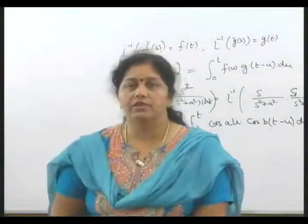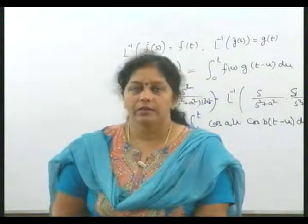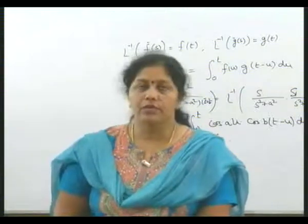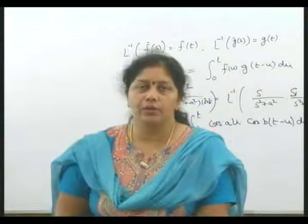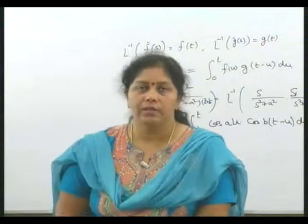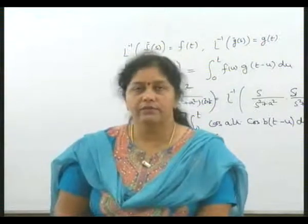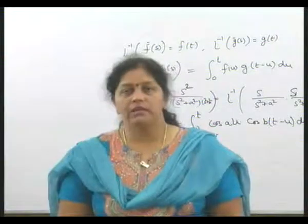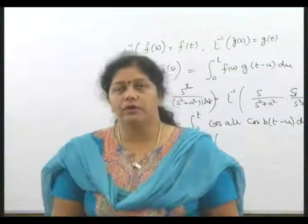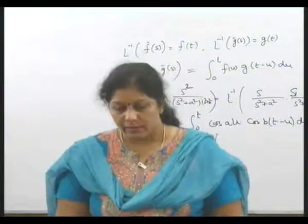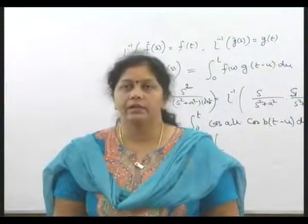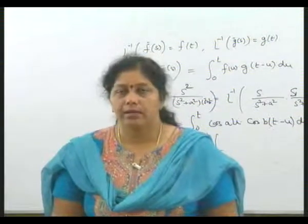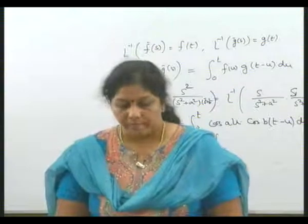L inverse of 1 upon s minus a comes out to be e to power a t, since L of e^(at) equals 1 upon s minus a. Similarly, L inverse of 1 upon (s minus a) to power n is e^(at) into t to power n minus 1 divided by gamma n.